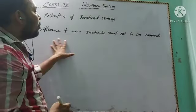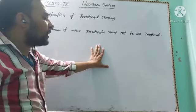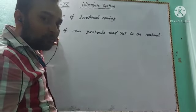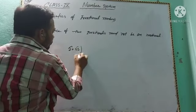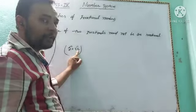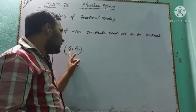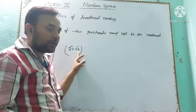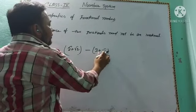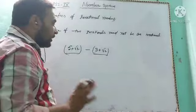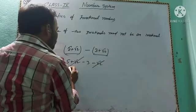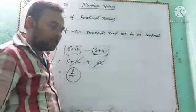Second property: the difference of two irrational numbers need not be irrational. For example, (5 + √2) and (3 + √2) are both irrational. Their difference is (5 + √2) − (3 + √2) = 5 − 3 = 2, which is rational. So the difference of two irrationals may or may not be irrational.